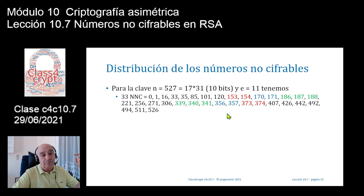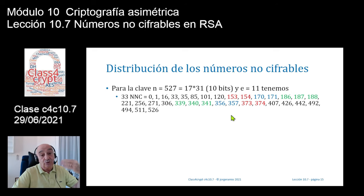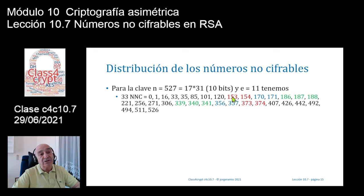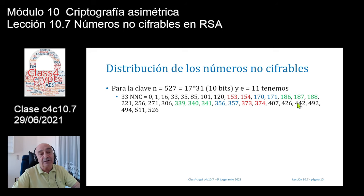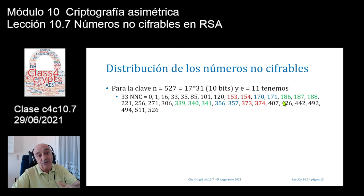Aparecen cosas interesantes: hay pares x y x+1, ambos no cifrables, como el 153 y el 154, luego el 170 y el 171. Aquí en particular aparecen tres números consecutivos x, x+1 y x+2 que los tres son no cifrables: 186, 187 y 188.